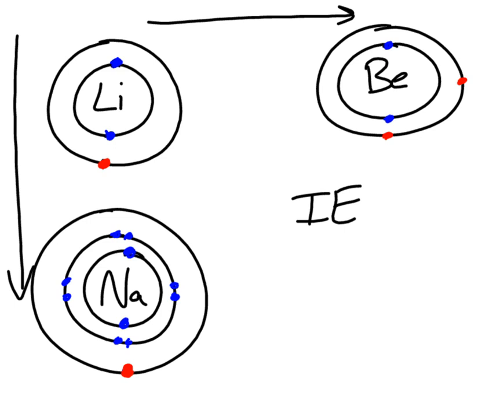As you go down a group — looking at lithium and sodium here — the more core electrons you have, the farther that outer electron is going to be pushed away. So ionization energy decreases as you go down a group. For sodium, these eight core electrons are pushing this red valence electron farther away. The more it gets pushed away from the nucleus, the less the nucleus can pull on it, so it doesn't take much energy to remove that electron.